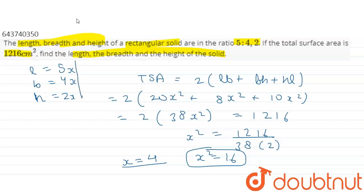by which we get length as 5 into 4, 20, breadth as 4 into 4, 16, and height as 4 into 2, 8. So these were the dimensions of this cuboid.